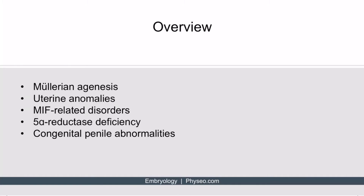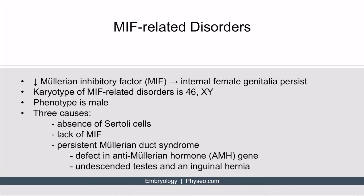Now we'll discuss MIF-related disorders, or Müllerian inhibitory factor-related disorders. All share a similar mechanism: Müllerian inhibitory factor is decreased, and this results in persistence of the internal female genitalia.